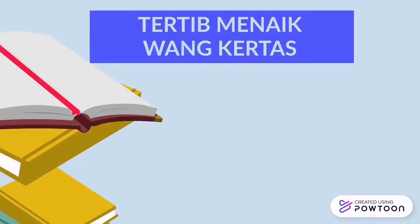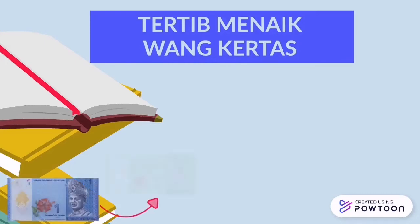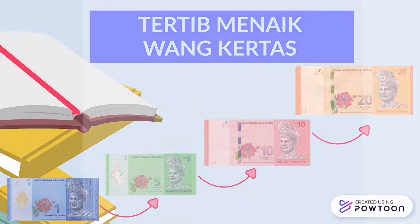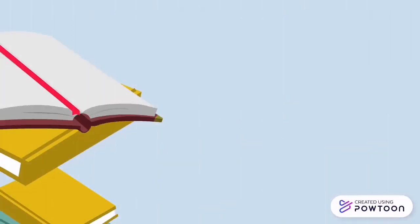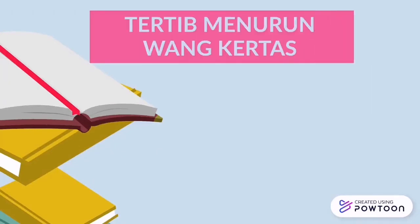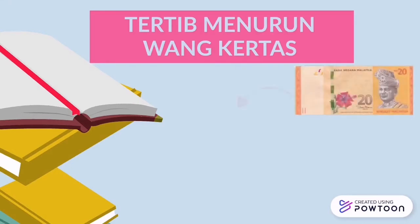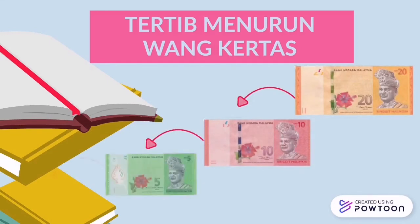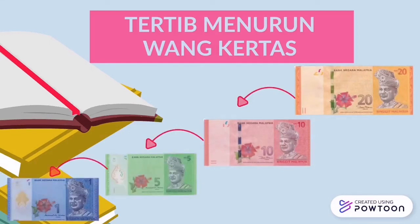Sekarang, mari kita menyusun wang kertas mengikut tertib menaik: 1 ringgit, 5 ringgit, 10 ringgit, dan 20 ringgit. Sekarang, mari kita menyusun tertib menurun bagi wang kertas. Semak jawapan murid-murid: 20 ringgit, 10 ringgit, 5 ringgit, dan 1 ringgit.